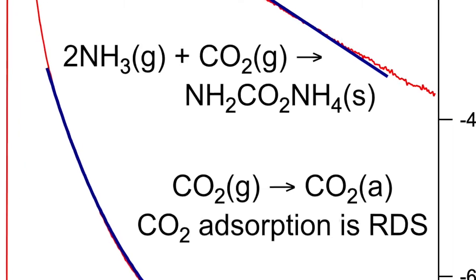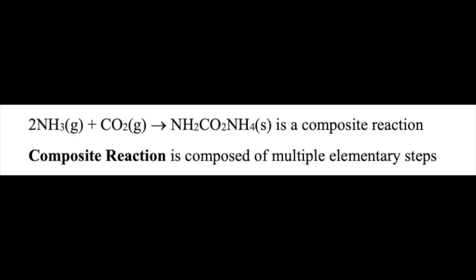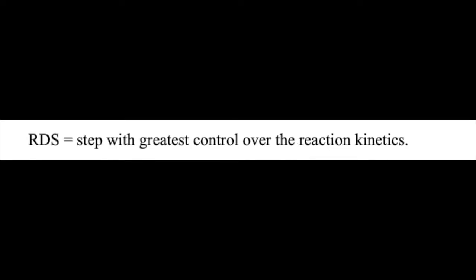The formation of ammonium carbamate from ammonia and carbon dioxide is a composite reaction with a well-defined rate-determining step, or RDS.